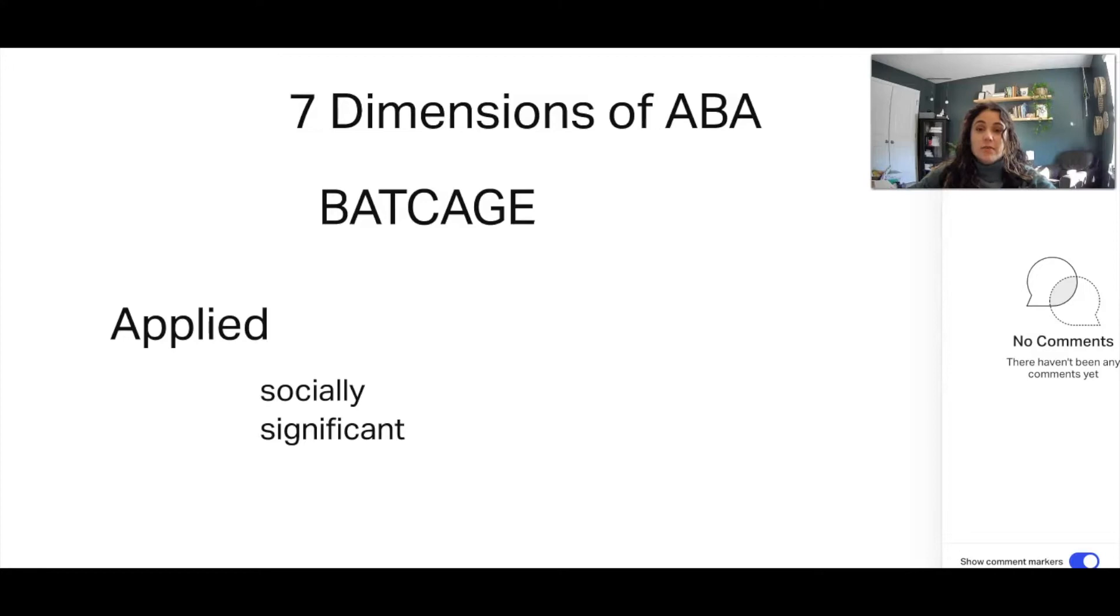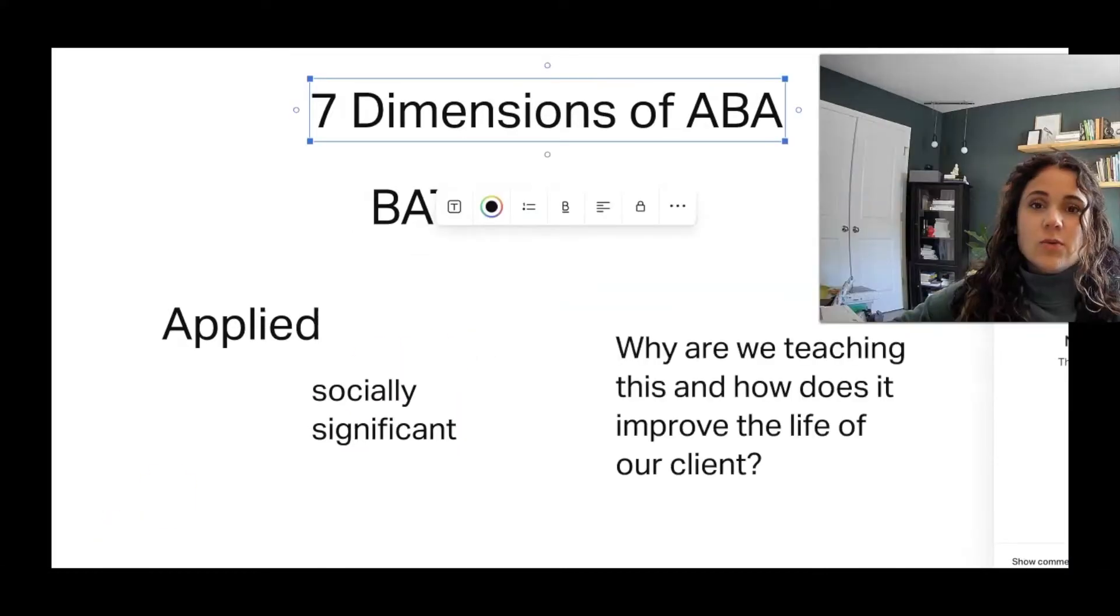Next up is Applied. This is probably the most important one in my opinion, and this is in regards to social significance. So what does this mean? When we say social significance, we really need to think about how this impacts our client. What is best for our client and why are we working on this skill? In other words, why are we teaching this skill and how does it improve our client's life?